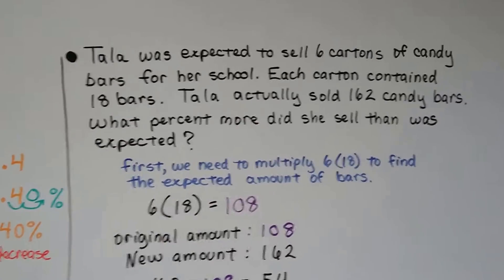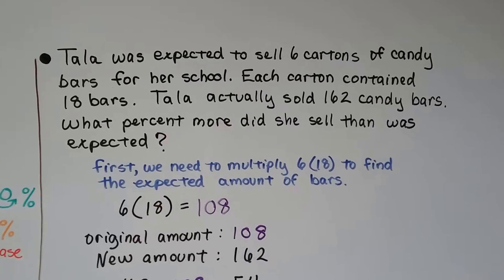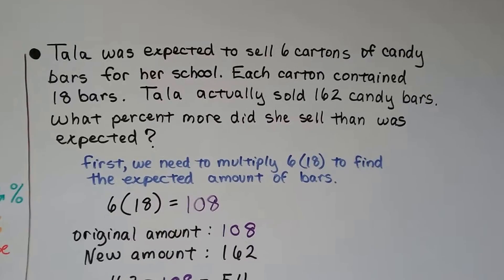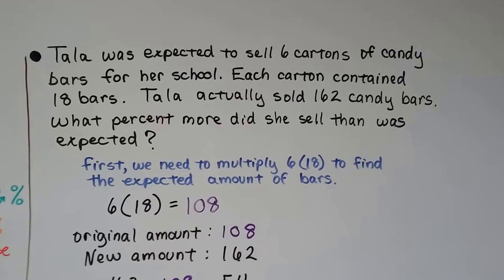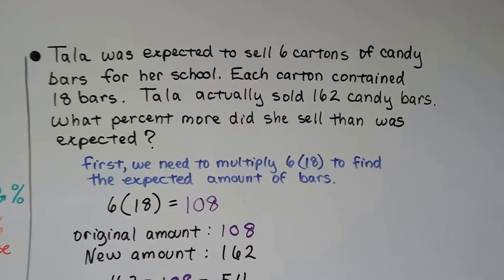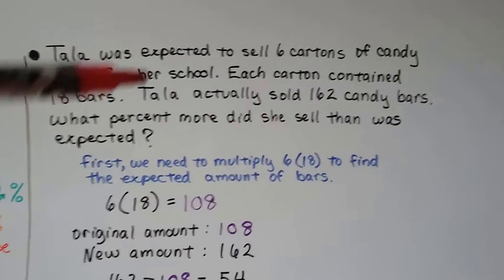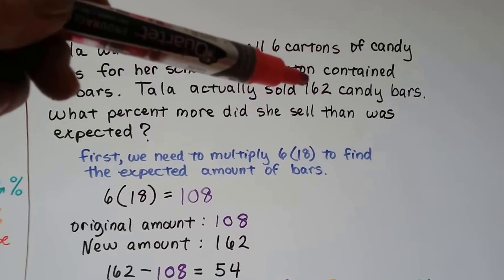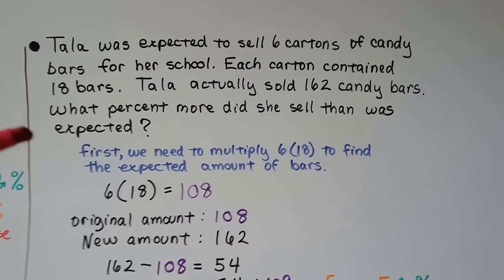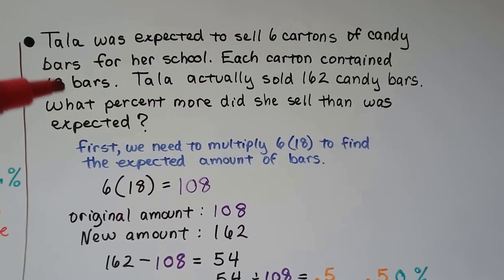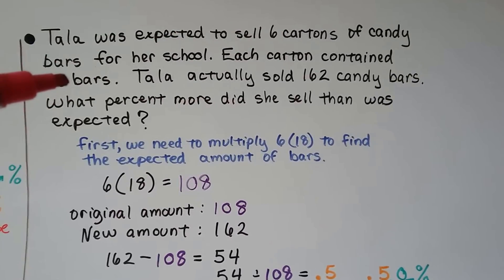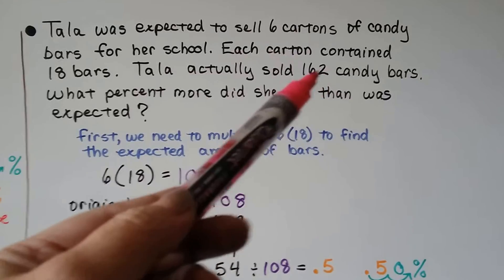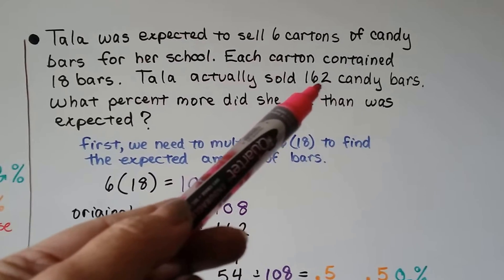Tala was expected to sell six cartons of candy bars for her school, and each carton contained 18 bars. Tala actually sold 162 candy bars. What percent more did she sell than was expected? These are in two different forms: six cartons of 18 bars each versus 162 individual bars, so we need to first multiply 6 times 18 to find the total candy bars she was expected to sell.